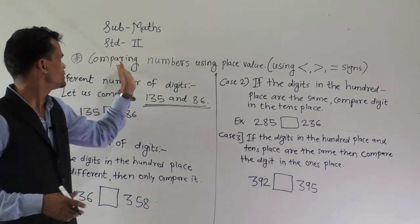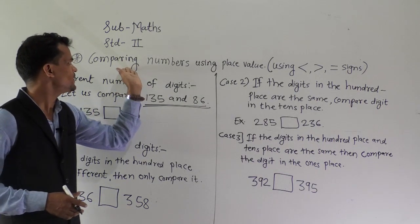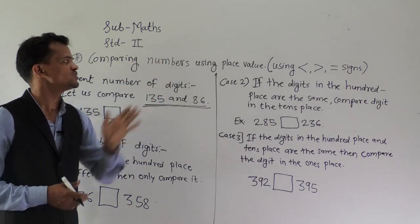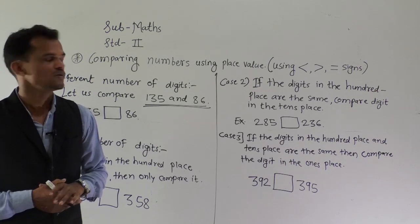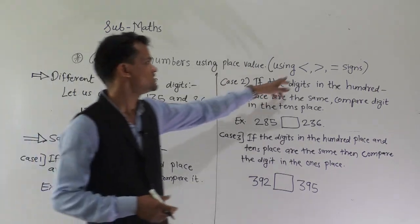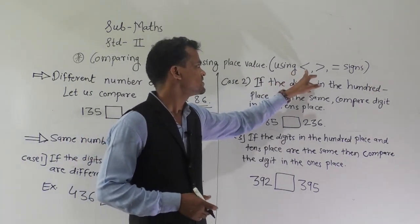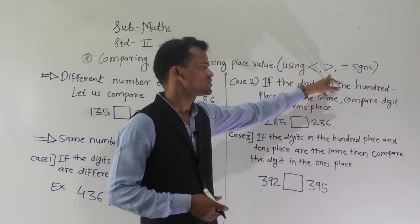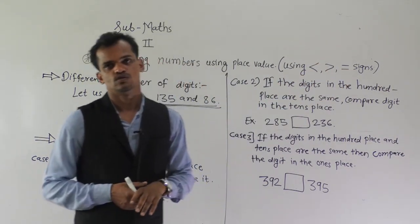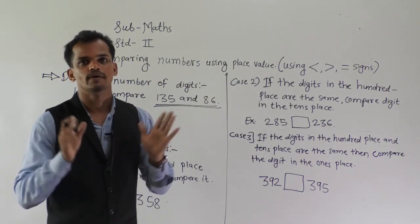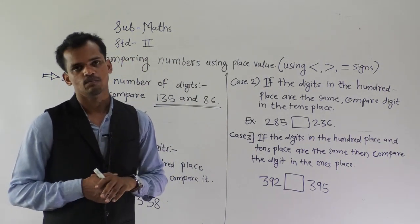Today we will see comparing numbers using place value. We use the signs greater than, smaller than, and is equal to sign to compare the numbers.